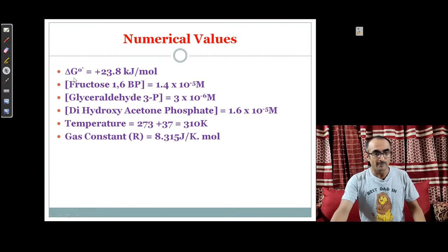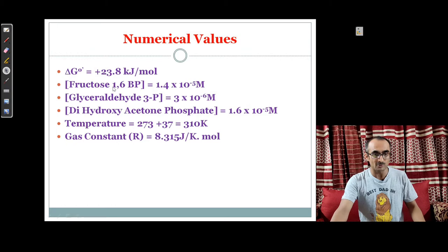All the numerical values: ΔG°′, which is the standard free energy change, is given. The concentration of the substrate, fructose 1,6-bisphosphate, is also given, and both product concentrations—glyceraldehyde 3-phosphate and dihydroxyacetone phosphate—are also given.